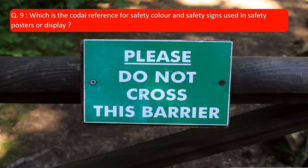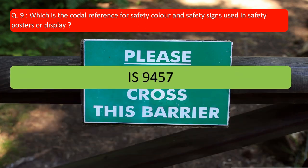Question number 9: Which is the code reference for safety colors and signs used in safety posters or displays? It is IS 9457, in which mandatory and prohibition signages are displayed and described.